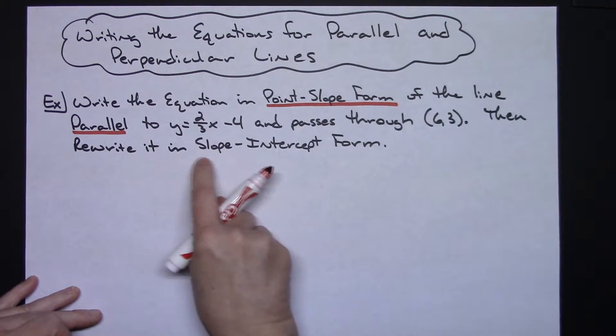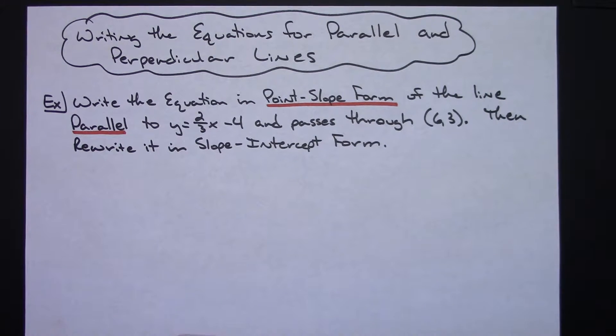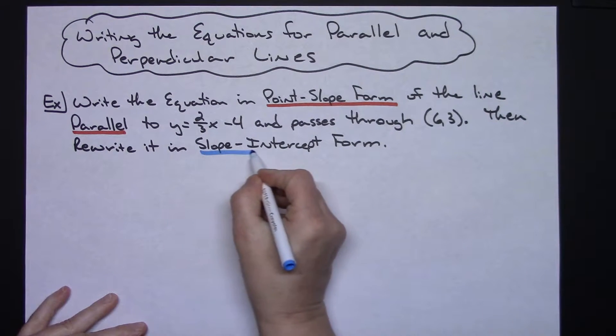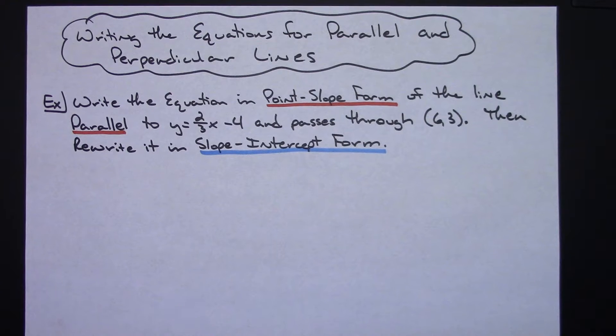Then rewrite it in slope-intercept form. Okay, so we've got two things that we've got to work on here first.